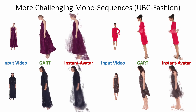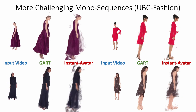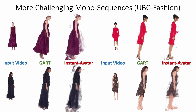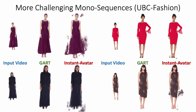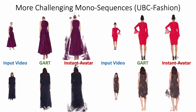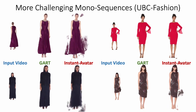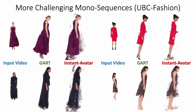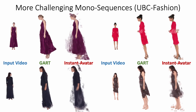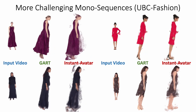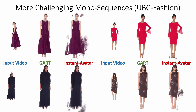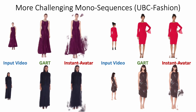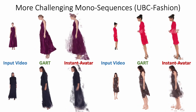Unlike ZJU MoCap and People Snapshot, we experiment with extremely challenging in-the-wild monocular videos. The input videos on the left column are from UBC Fashion, which has complex dynamic clothes and fast motion. While GART still performs reasonably in the middle column, the state-of-the-art method Instant Avatar may fail in the right column. Note how Instant Avatar can capture the upper body but fails to capture the highly dynamic area.